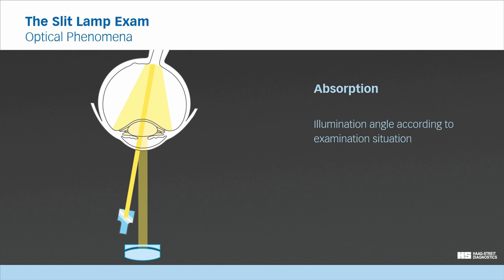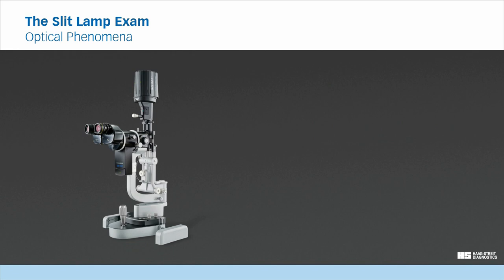To achieve this type of illumination, light is reflected from a more posterior structure such as the retina, the iris or the lens. Like for the refraction phenomena, the illumination angle depends on how the reflecting structure is to be illuminated in order to create the desired absorption phenomena.